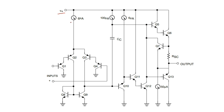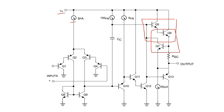Here we have a voltage source V-plus and a device — an ohmmeter — that measures current. There are many Darlington transistors here. A Darlington transistor always has a base, collector, and emitter, where the emitter of the first transistor is connected to the base of the second. For example, Q5 and Q6 form a Darlington pair, as do Q7 with the next transistor.